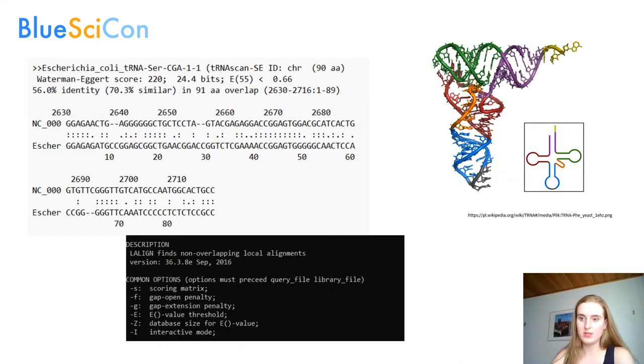And every organism has its own set of tRNA and ribosomal RNA sequences. We align all tRNA sequences to rRNA sequences within a single species. The tool we mainly use is LALINE software, which allows us to compare two sequences and see how similar they are.